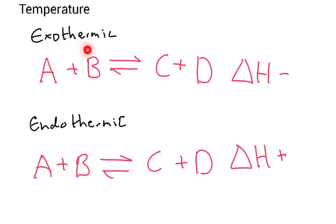In an exothermic reaction, if I increase the temperature, the system has to work to oppose that change. So the equilibrium position will shift towards the left — towards A and B — because going in that reverse direction releases more heat, which would actually add more heat, so the system works to reduce the amount of heat.